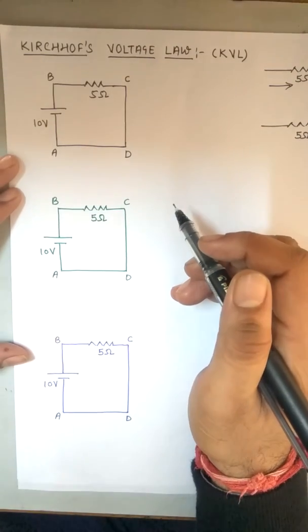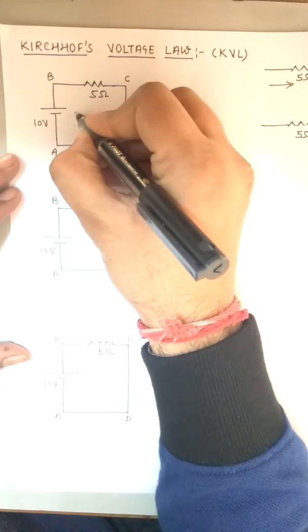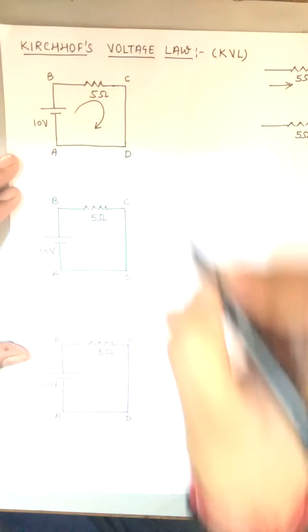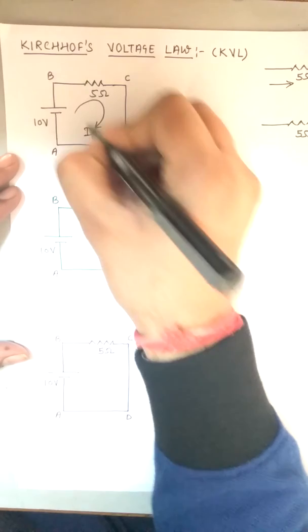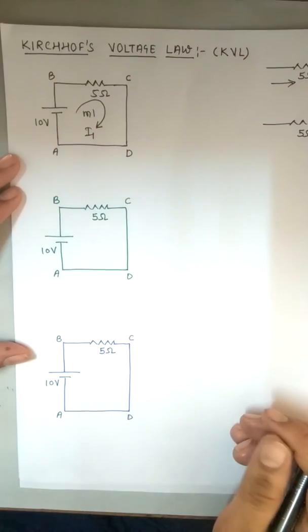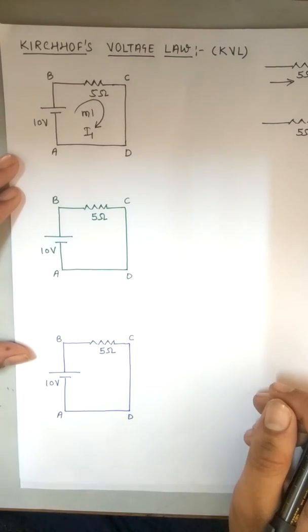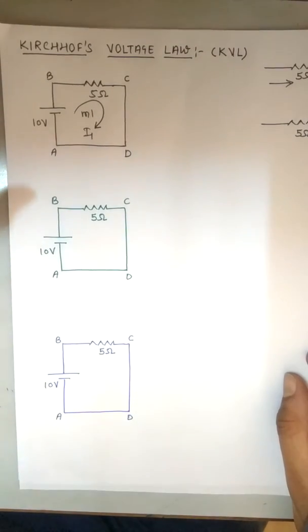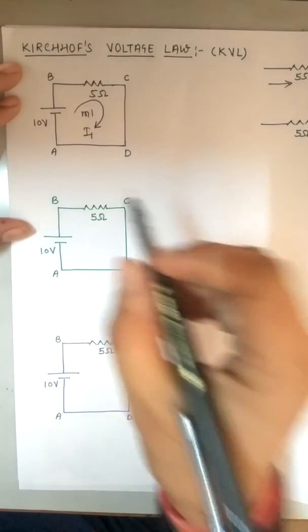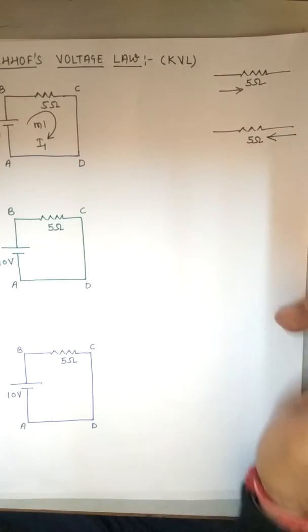After naming the nodes, you can assume current either clockwise or anticlockwise. In this question, I first make the current clockwise and assume it is I. The smallest unit of a closed path is called a mesh, and the largest unit of a closed path is called a loop. I will explain more in the next lecture. Here, this circuit is both a loop and a mesh.